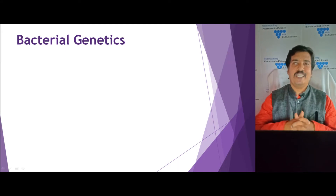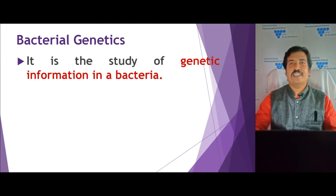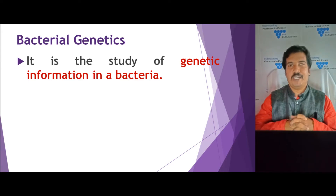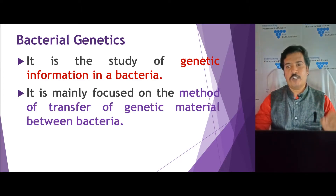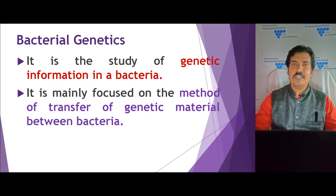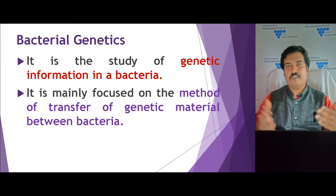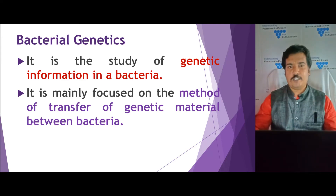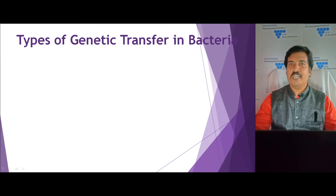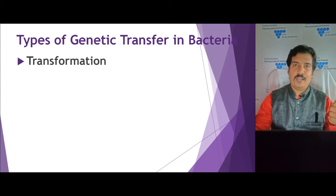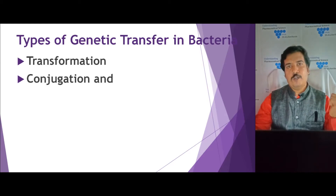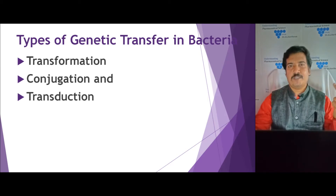First we understand about bacterial genetics. Bacterial genetics is the study of genetic information in a bacteria — the complete genetic study of a bacterium. More precisely, this is focused on the methods of transfer: how genetic material is transferred from one bacteria to another. The transfer of genetic material occurs in three different types: bacterial transformation, conjugation, and transduction, which can be further classified as generalized and specialized transduction.